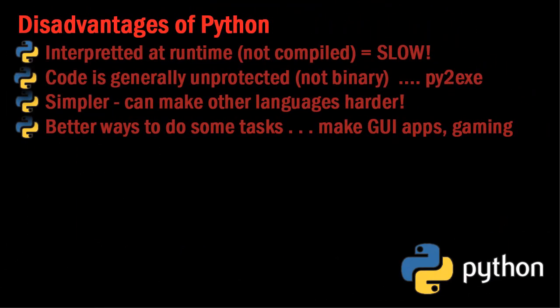There are some disadvantages to Python compared to other languages. One of the biggest is that it's interpreted at runtime and not compiled. Compiled languages take your source code and create a binary version — an executable or exe file. Because Python is interpreted at runtime, it makes Python programs a little slower than something compiled into the machine language of the platform. The advantage is that it allows Python to run on multiple platforms.